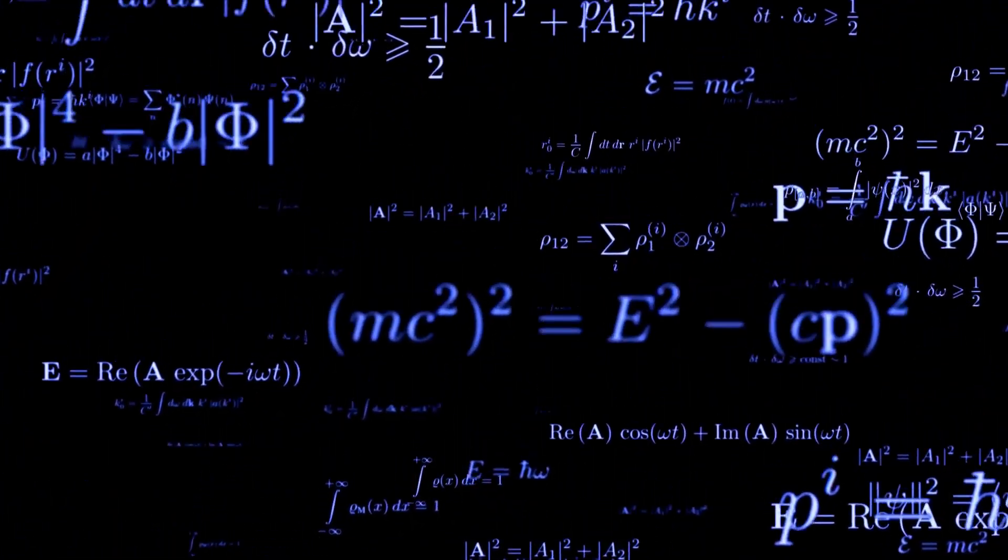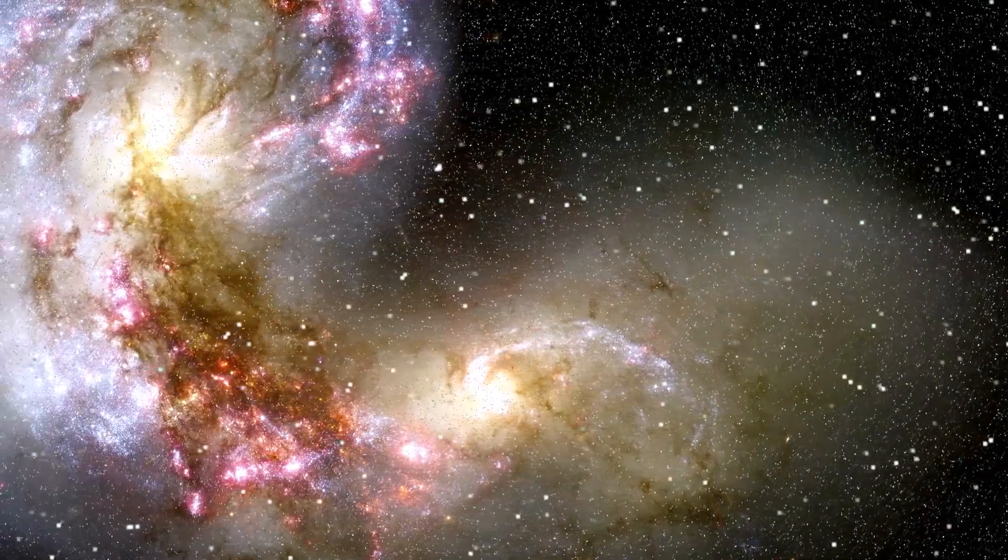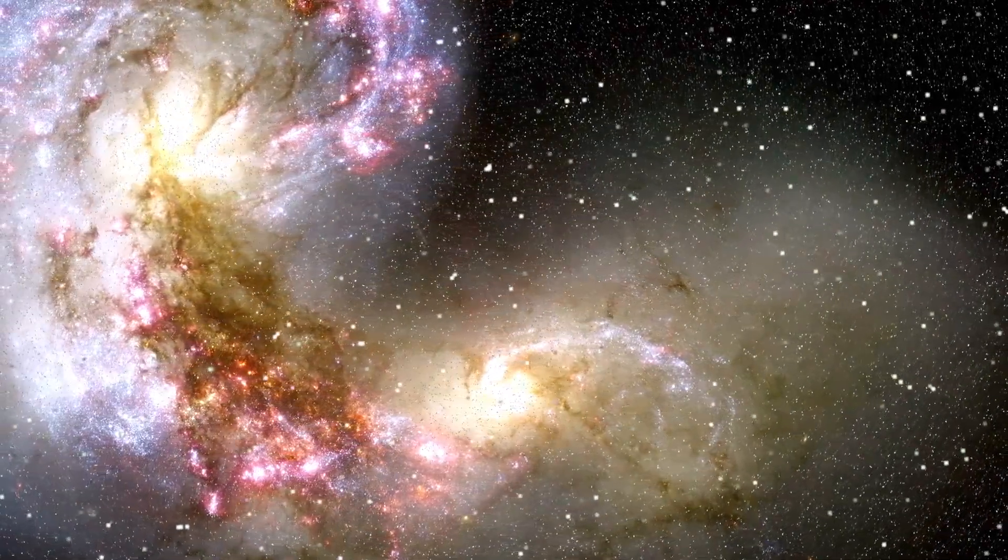And guess who gets another confirmation of this theory? Albert Einstein and his revolutionary theory of general relativity, which predicted that light could be bent by gravity. This observation fulfills Einstein's prophecy, reaffirming the brilliance of his ideas.